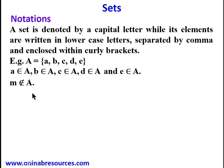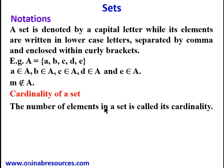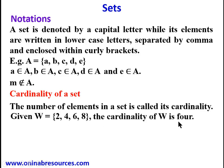Then we look at cardinality of a set. The number of elements in a set is called its cardinality. So we look at W, which is a set of {2, 4, 6, 8}. Since there are four elements in set W, we say the cardinality of W is 4, and this is denoted by n(W) = 4.